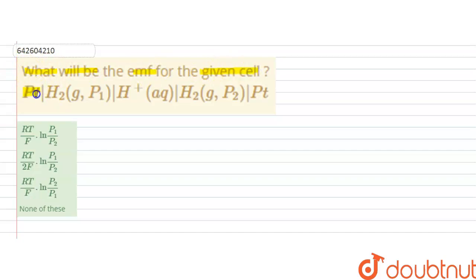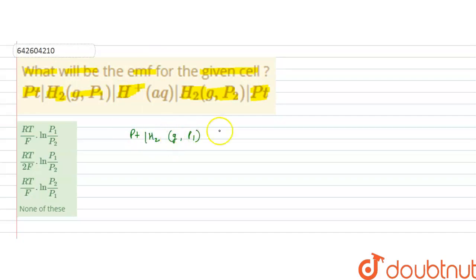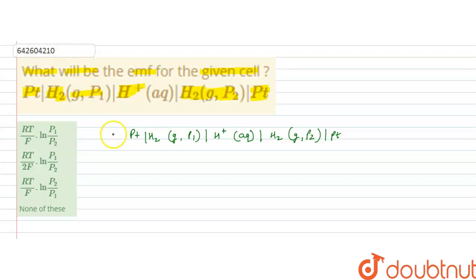The given cell is: platinum | H₂ gas at pressure p1 | H⁺ aqueous || H⁺ aqueous | H₂ gas at pressure p2 | platinum (inert electrode). We are given this cell and we have to find out the EMF for it.